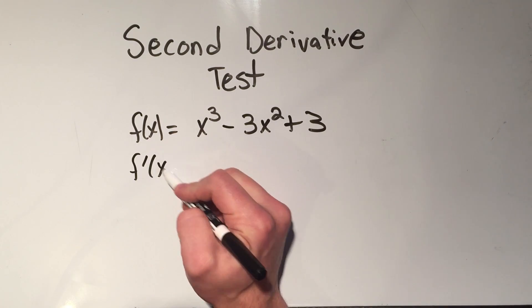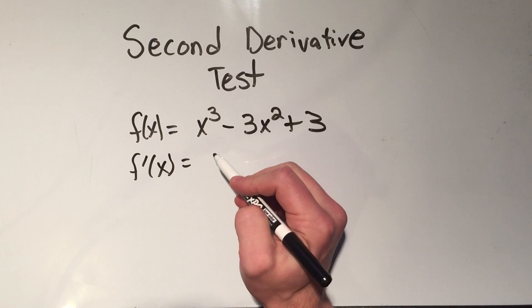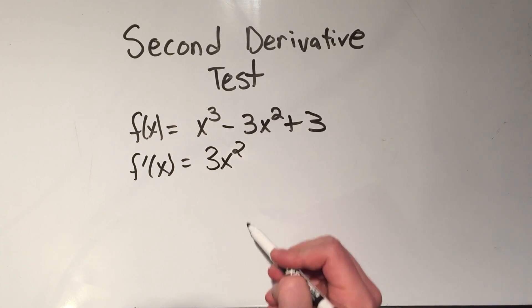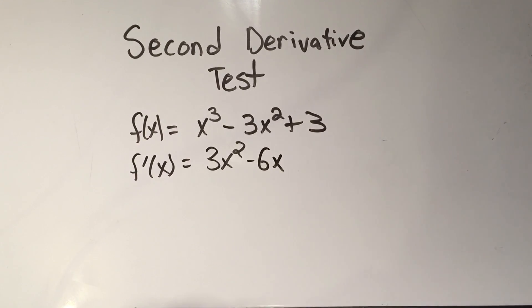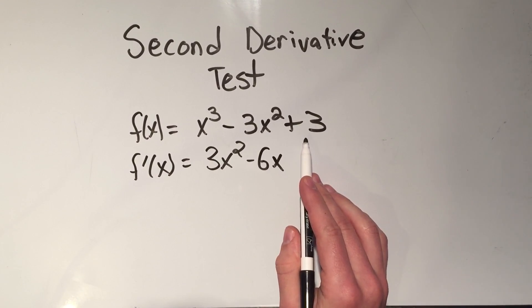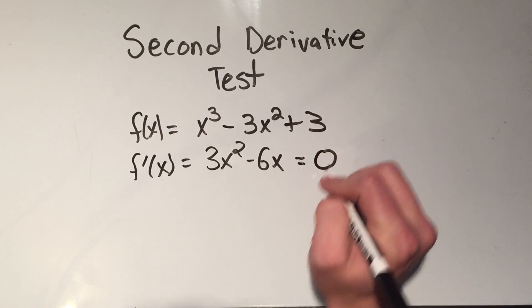To find my critical points, I need the first derivative. That's pretty easy using the power rule. The derivative of x cubed is 3x squared. The derivative of minus 3x squared is minus 6x. And the derivative of 3 is zero. So to find my critical points, I set my first derivative equal to zero.